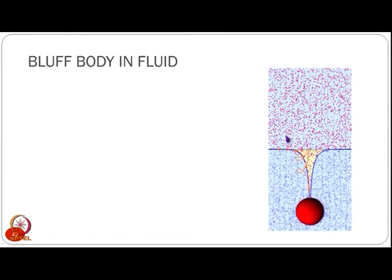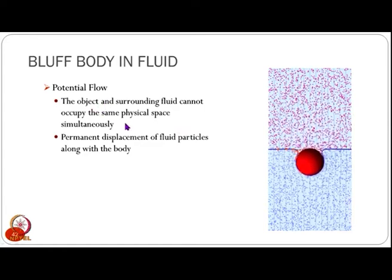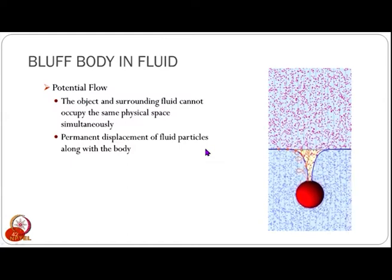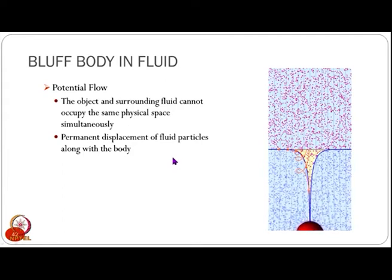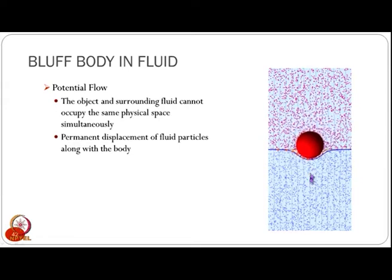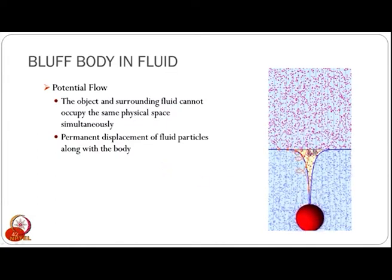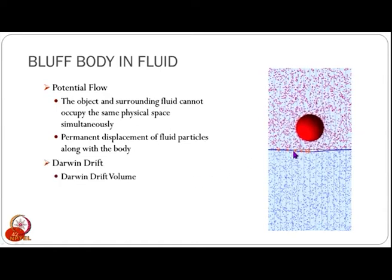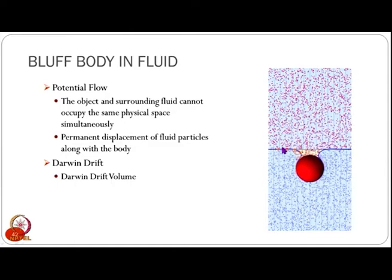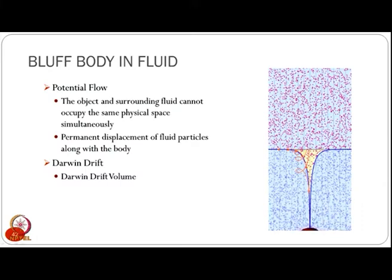That displacement is a complete transfer of particles from one portion to the other. This can be explained using potential flow — the principle that an object and the surrounding fluid cannot occupy the same physical space simultaneously. We also see a permanent displacement of fluid particles along with the body, shown as the yellow region in the animation. This volume is known as the Darwin drift volume, because the particles have drifted from one region to another permanently.